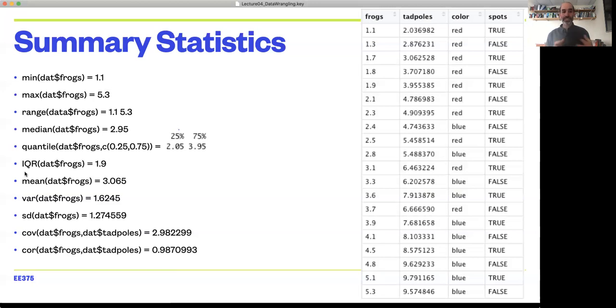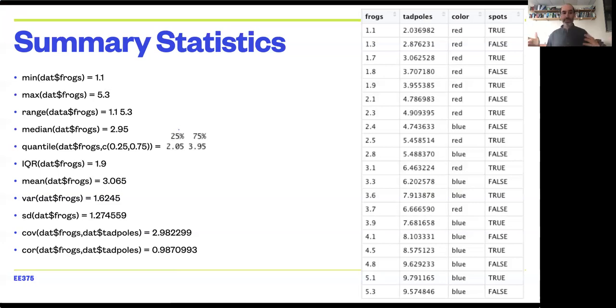IQR, the next function stands for interquartile range, which is just the difference between that 25th and 75th percentile. And so the overall range of the data tells you the most extreme values. An interquartile range tells you about the range of the middle 50% of your data. So it's telling you more about the center of the data.